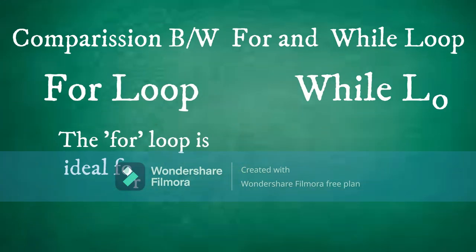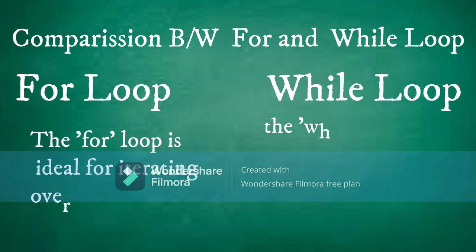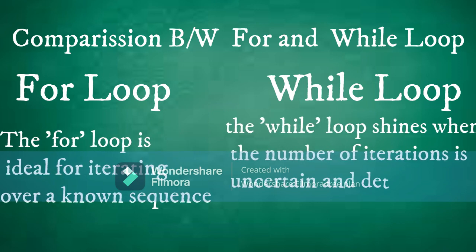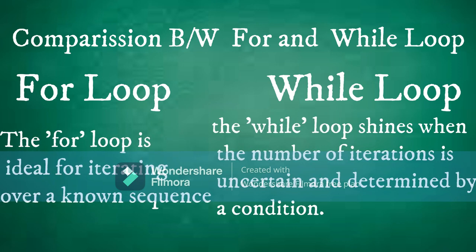Now let's compare the for loop and the while loop. While they both serve similar purposes, they have distinct advantages over each other. The for loop is ideal for iterating over a known sequence, while the while loop shines when the number of iterations is uncertain and determined by a condition.